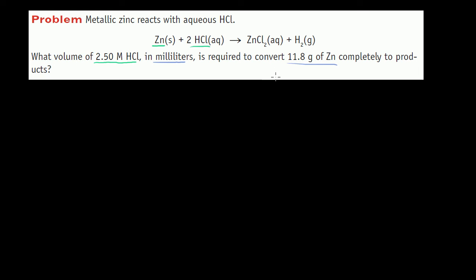Here's the action plan. We're starting off with 11.8 grams of zinc. We need to figure out how many moles of zinc that is. Then, assuming this is a balanced equation — which I'll verify — for every mole of zinc we're going to need 2 moles of hydrochloric acid. Then we can figure out, given how many moles of HCl we need, how many liters of the solution we need based on its concentration.